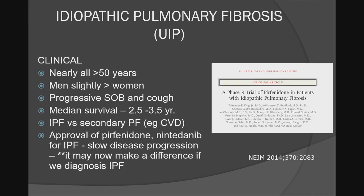This is a disease generally of older individuals — except for familial cases, it's not usually found under age 50. There is a slight prevalence in men. Symptoms include shortness of breath and cough. Traditionally it has been associated with a median survival in the three-year range, which is actually worse than many malignancies. We can divide it into IPF and secondary causes of pulmonary fibrosis, particularly connective tissue or collagen vascular disease.